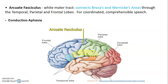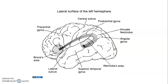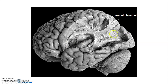We have what we call conduction aphasia. Conduction aphasia is when both motor speech and sensory speech have been affected due to lesions at the arcuate fasciculus. This shows the lateral surface of the left hemisphere — Broca's area at the pars triangularis and pars opercularis, and Wernicke's area at the supramarginal gyrus and part of the temporal lobe. That connection is the arcuate fasciculus white matter tract.